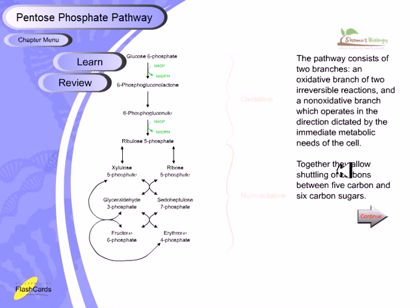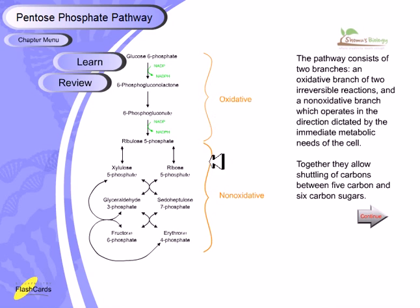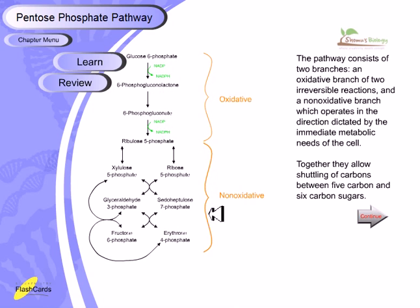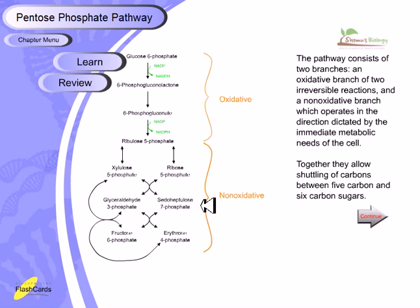The pathway consists of two branches: an oxidative branch containing irreversible reactions, and a non-oxidative branch which operates in the direction directed by the immediate metabolic needs of the cell. The irreversible oxidative stage generates NADPH. The non-oxidative step does not generate NADPH but generates 5-carbon, 3-carbon, 4-carbon, 6-carbon, and 7-carbon components. Together they allow shuttling of carbons between five-carbon and six-carbon sugars.